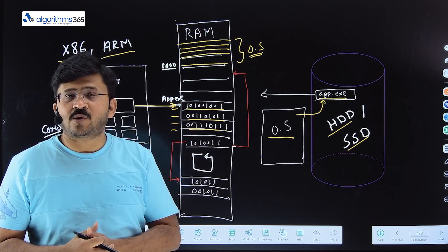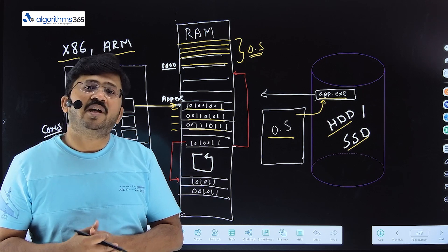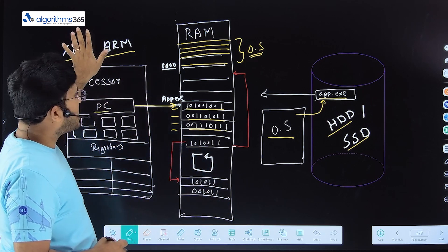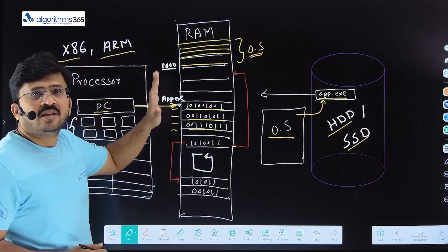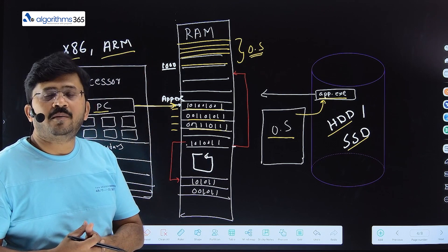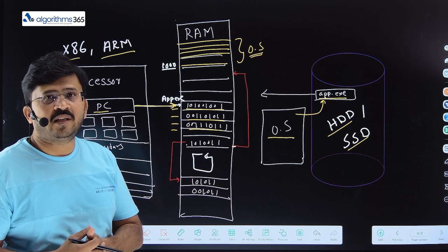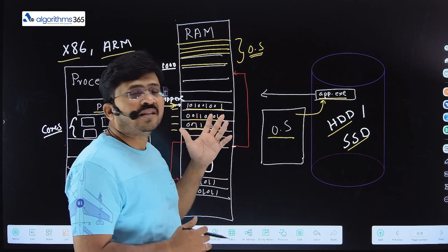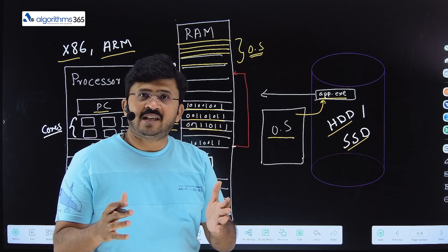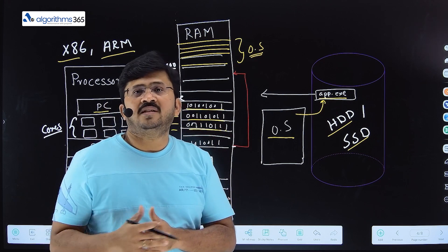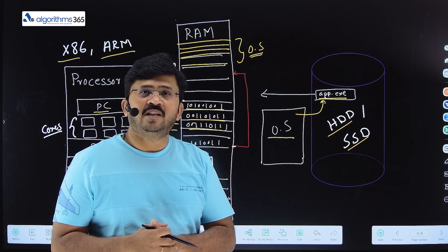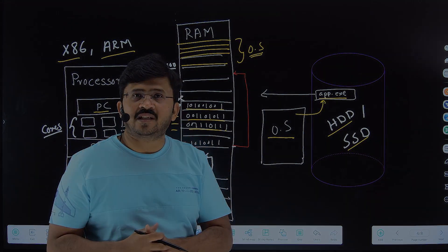These days, laptops and PCs are also moving to ARM architecture because we want our batteries to last longer and use mobile devices for longer periods. Based on the architecture, the way programs are written and compiled will vary. Programs were written for a specific architecture in earlier days, but as languages evolved, they were written in a way that can run on different architectures.